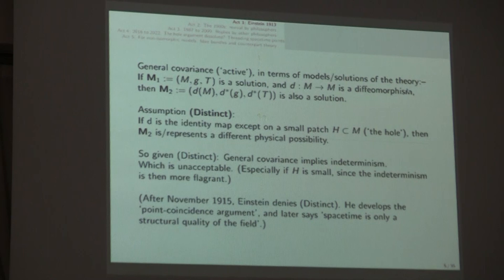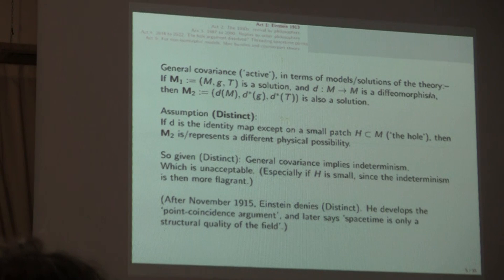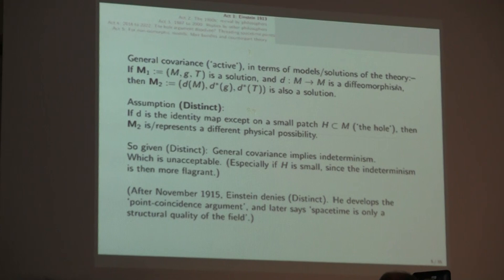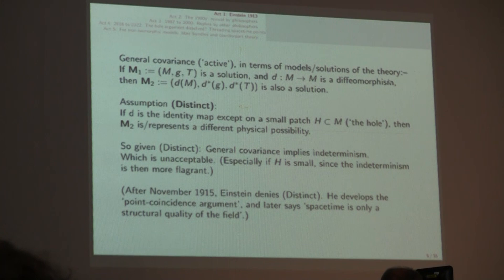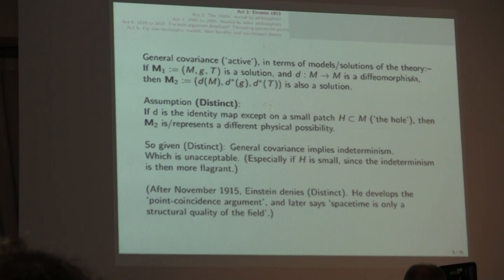Threading, like when you do sewing, it's not identity, it's a relation of threading points together from one manifold to another. Finally, Act 5 is about fiber bundles and counterparts. So, here's Einstein then. General covariance, it's a very non-historical Einstein. General covariance, considered in the active way that is often done now, if a bold M1 is a solution, so it's a manifold, a Lorentz metric, and a stress-energy tensor.